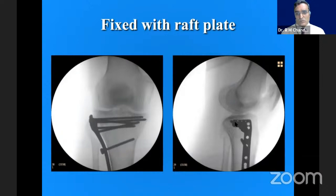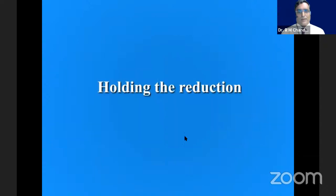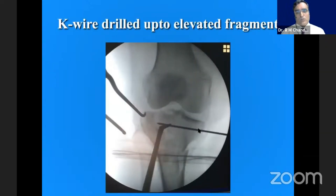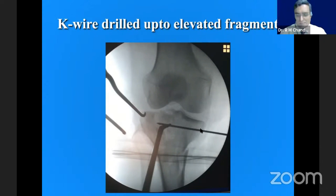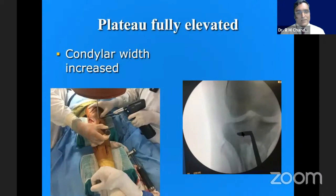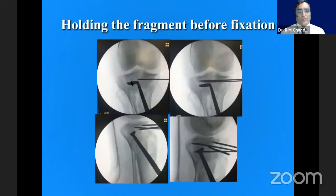Our rafting screws should support the depressed fragment. At times, place the plate a bit more posteriorly so the anterior end goes more anteriorly. Holding the reduction is another important thing — in this depression, use 2.5 mm or 3 mm K-wires, three K-wires in a row, getting the fragment elevated and then fixing, avoiding any interception. This interception always leads to varus, so it has to be avoided.